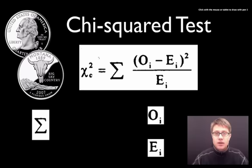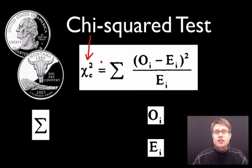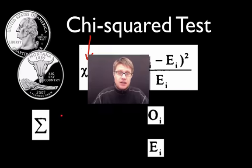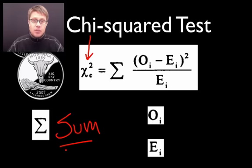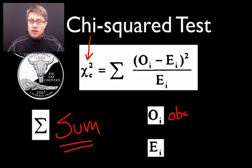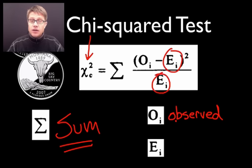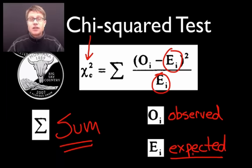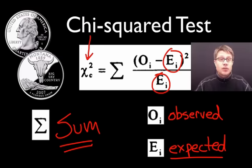The first thing you should figure out is what do all these variables mean. The symbol χ² stands for chi-squared, developed in the early 1900s by Karl Pearson — Pearson's chi-squared test. The Σ symbol means we're going to add up a number of values. O stands for the data you actually collect — we call that observed data. The E values are the expected values, which you can figure out before you start an experiment and then simply compare them to your observed values.